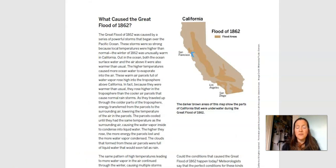What caused the Great Flood of 1862? The Great Flood of 1862 was caused by a series of powerful storms that began over the Pacific Ocean. These storms were so strong because the local temperatures were higher than normal. The winter of 1862 was unusually warm in California. Out in the ocean, both the ocean surface water and the air above it were also warmer than usual. The higher temperatures caused more ocean water to evaporate into the air. These warm air parcels full of water vapor arose high into the troposphere above California. Because they were warmer than usual, they rose higher in the troposphere than the cooler air parcels that caused normal rainstorms. As they traveled up through the colder parts of the troposphere, energy transferred from the parcels to the surrounding air, lowering the temperature of the air in the parcels. The parcels cooled until they had the same temperature as the surrounding air, causing the water vapor inside to condense into liquid water. The higher they rose, the more energy the parcels lost and the more water vapor condensed. The clouds that formed were full of liquid water that would soon fall as rain.